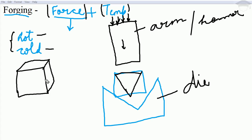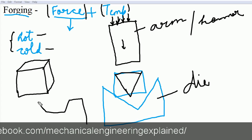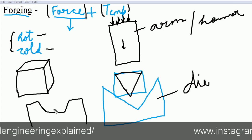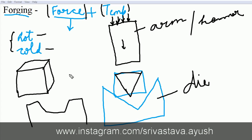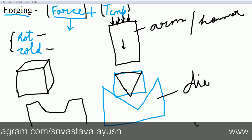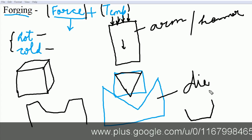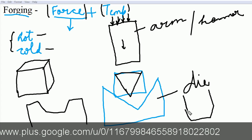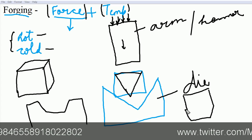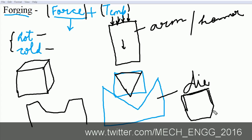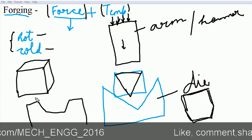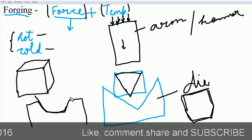When the block is repeatedly pushed against the die, the metal deforms and the final shape of the block will match the die shape. If the die shape is V, the metal shape will be V. If the die is of another shape, suppose this is the die shape, the final shape of the block will be like this. I hope it is clear.